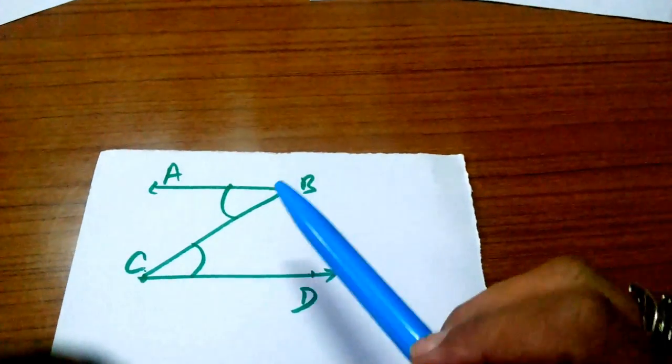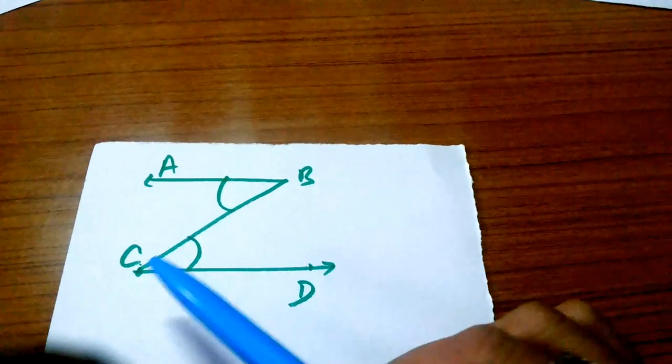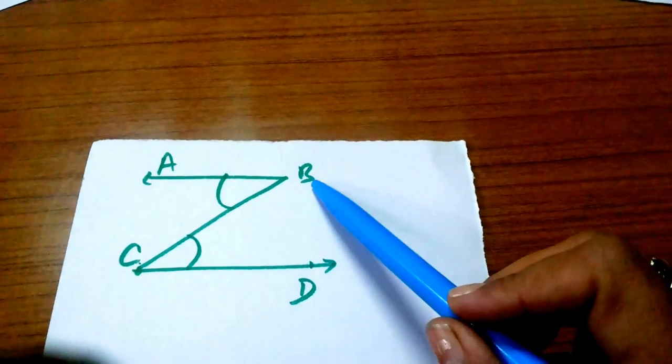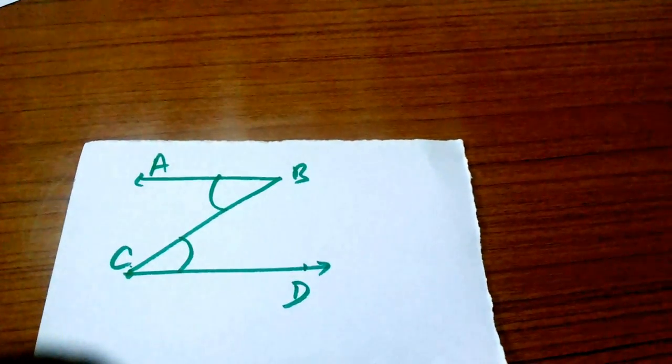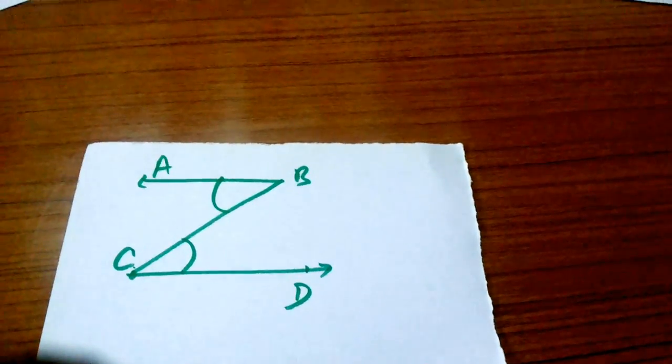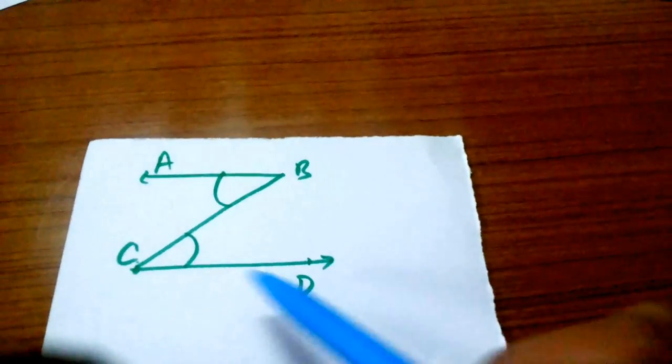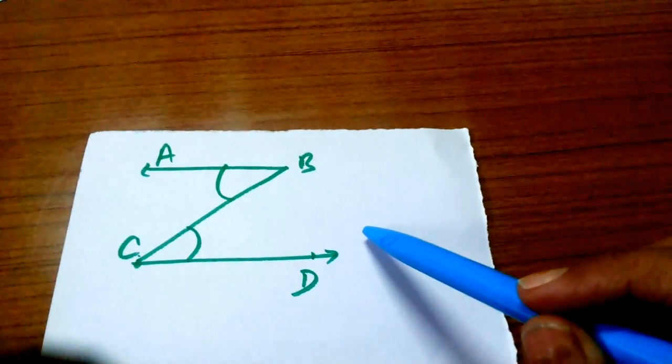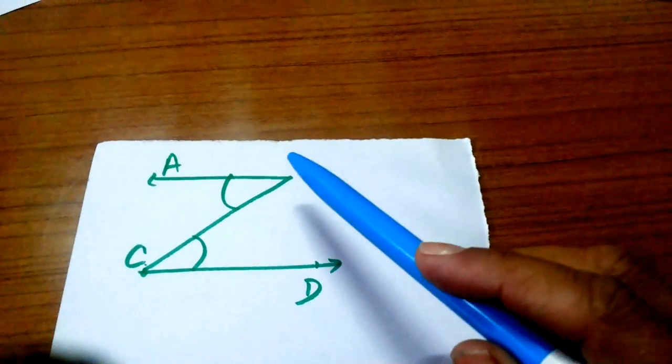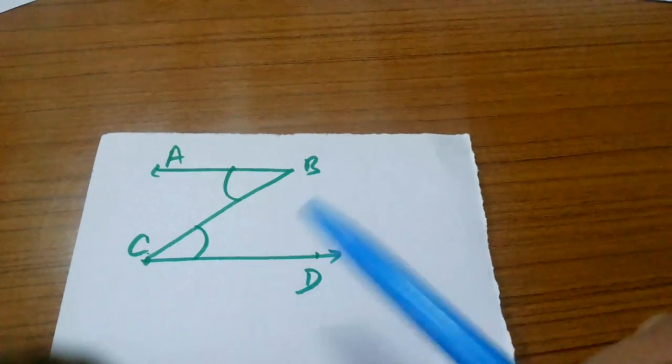What do you say about angle ABC and angle DCB? Are they adjacent angles? No, angle ABC and angle DCB are not adjacent because they have different vertices.